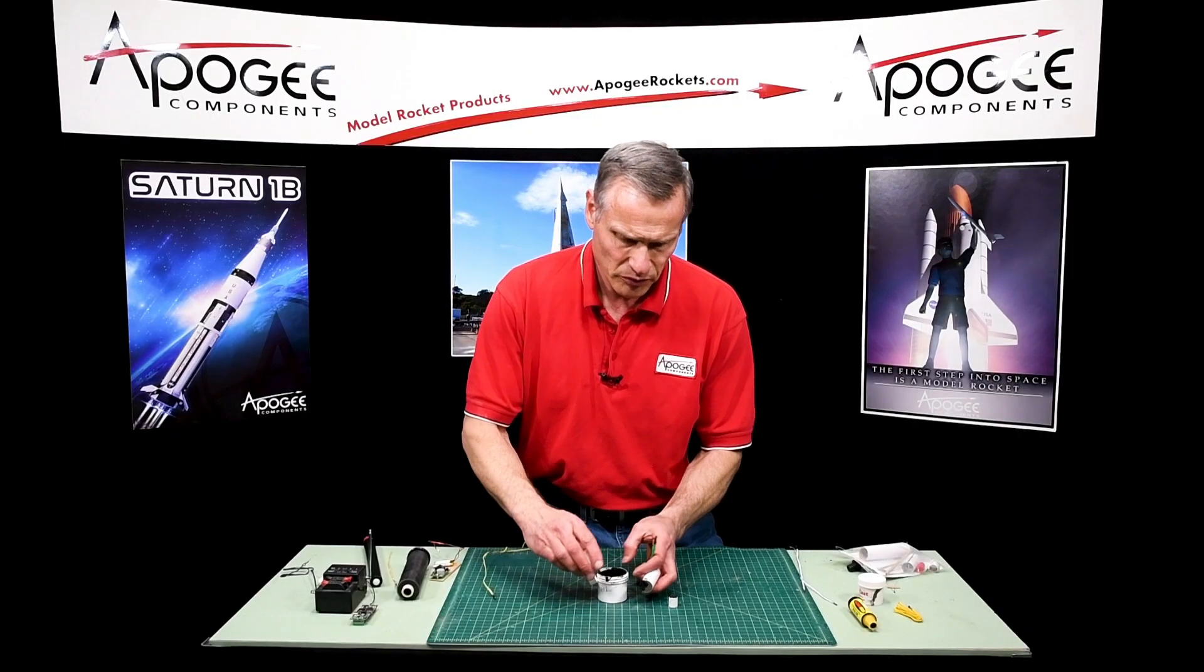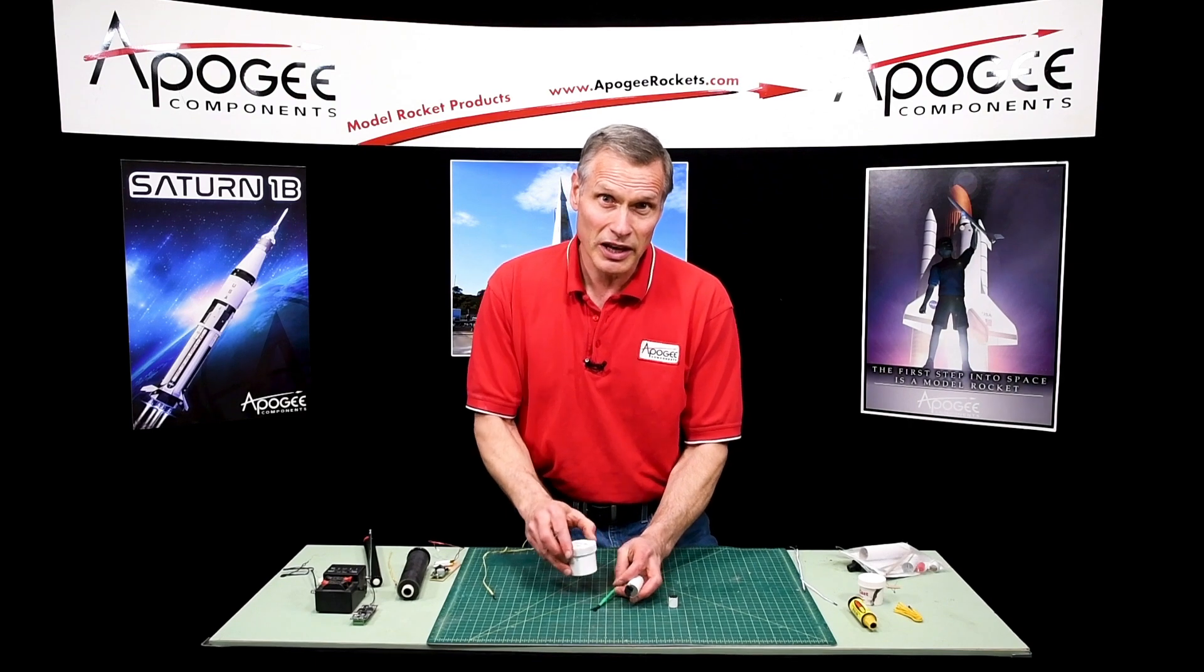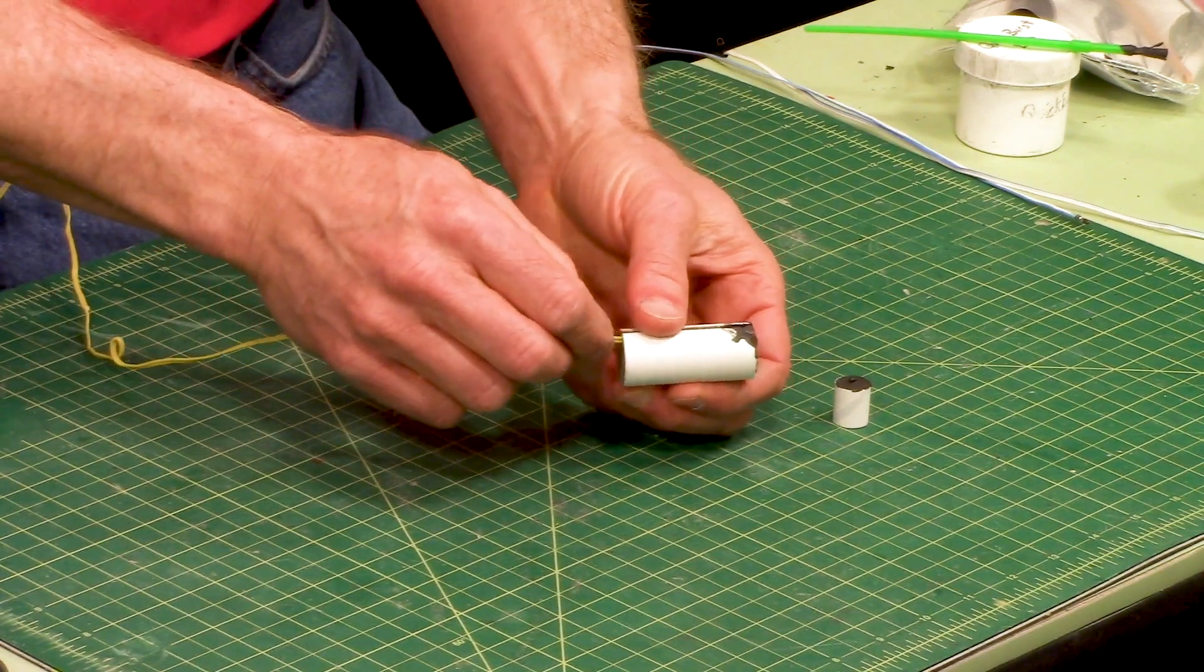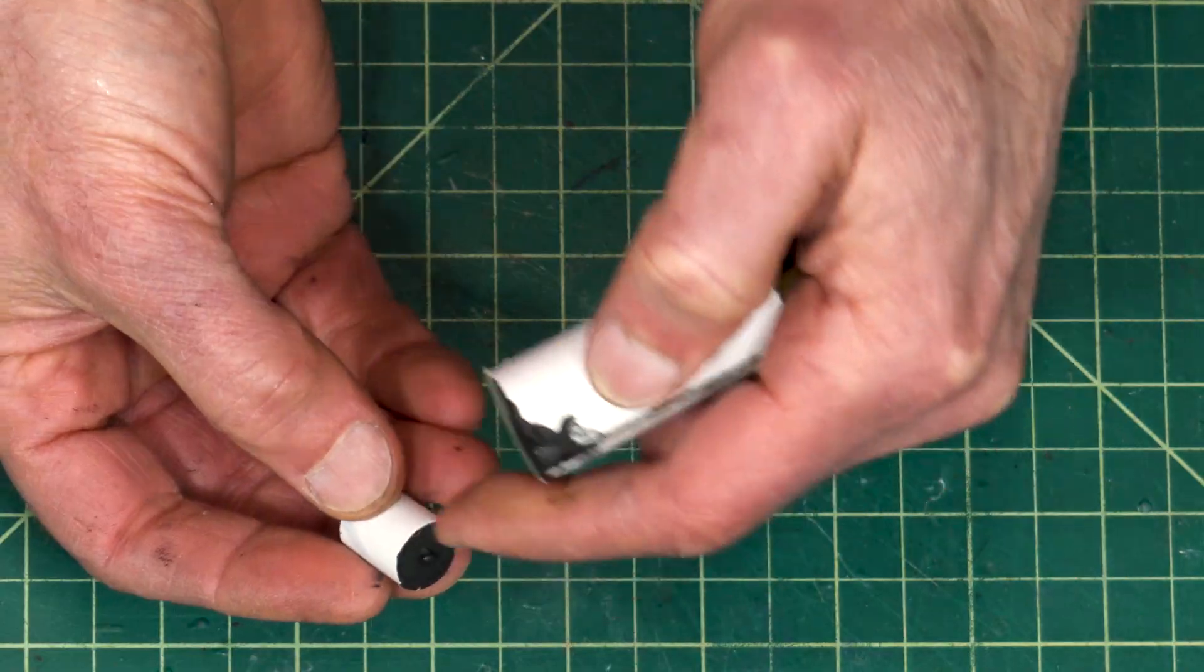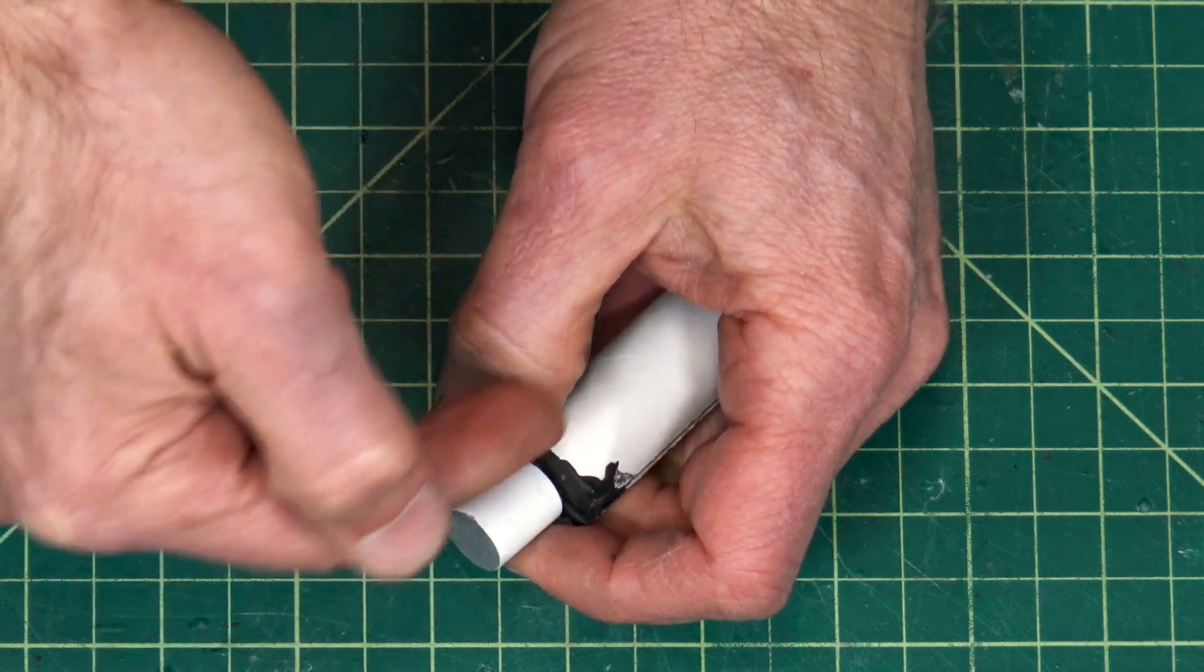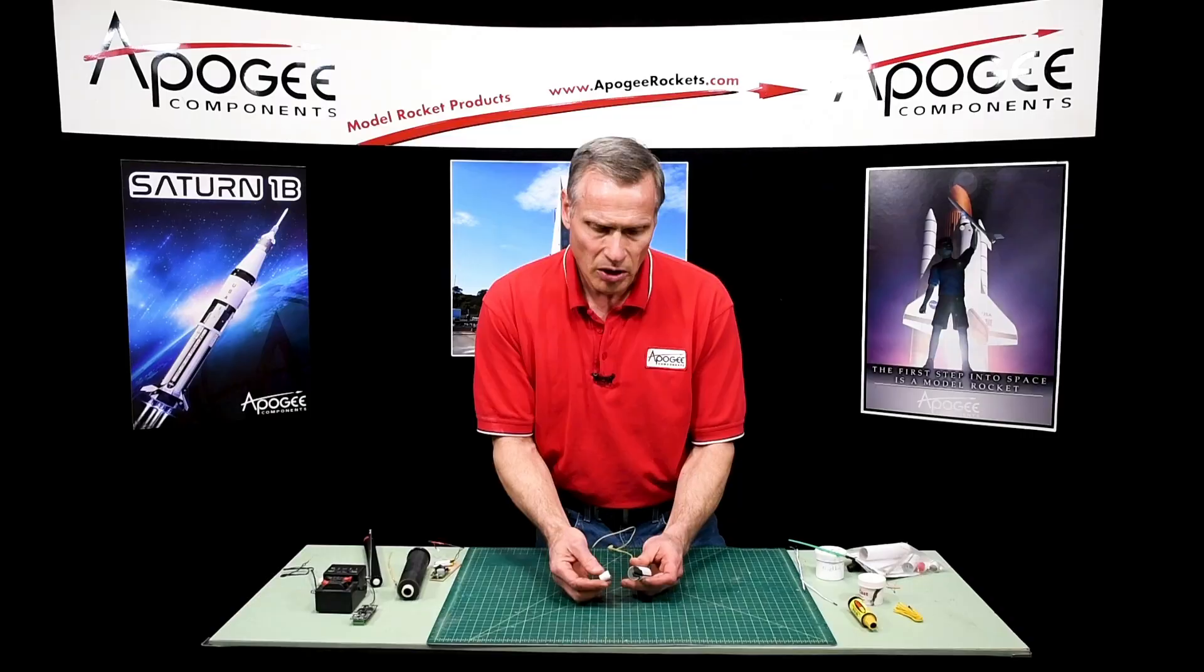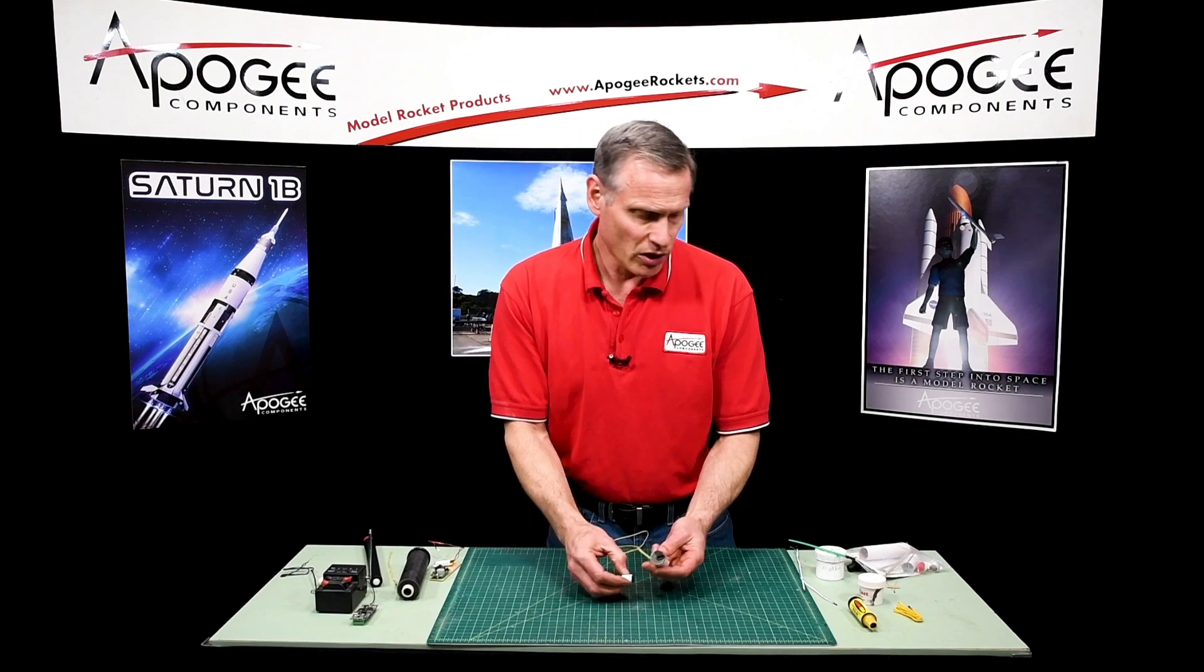And so now this is a lot easier to ignite than the propellant by itself so your e-match going up through there will ignite that and you also have some on the end of the delay grain and that's the part that goes that side. Now this side you don't want to cover, it's just that one side right there and so that's what you will do for a reload.